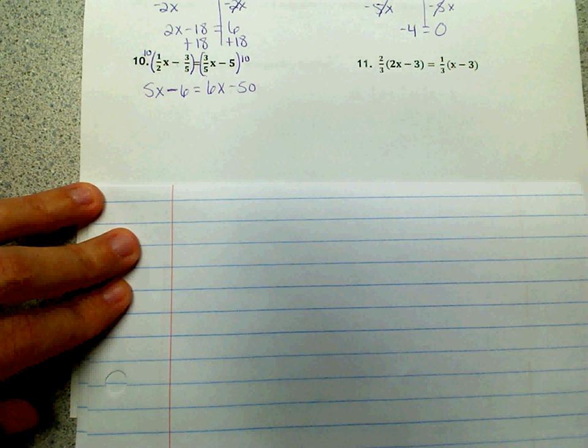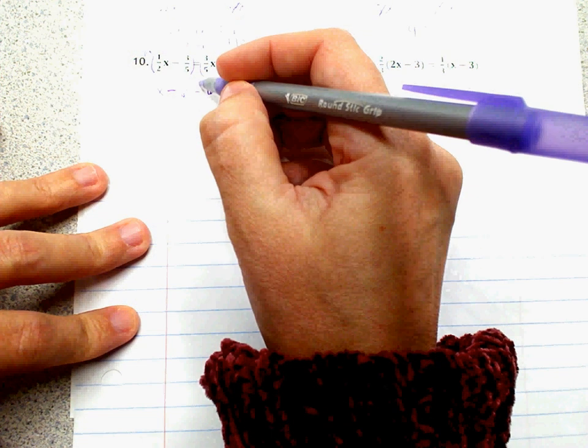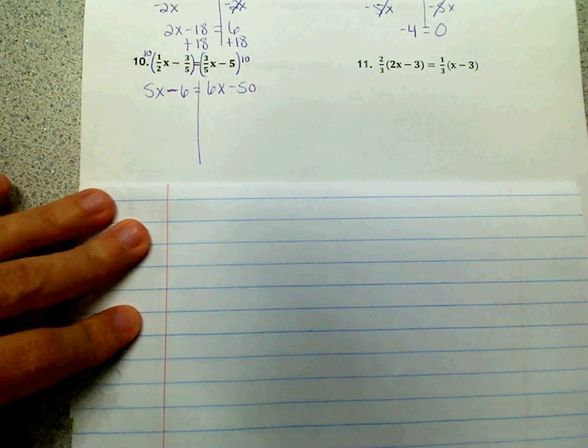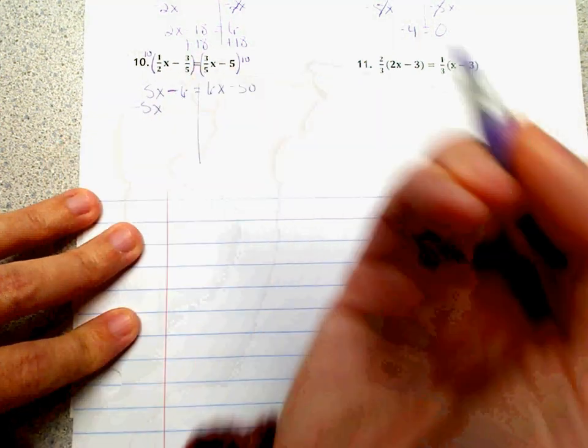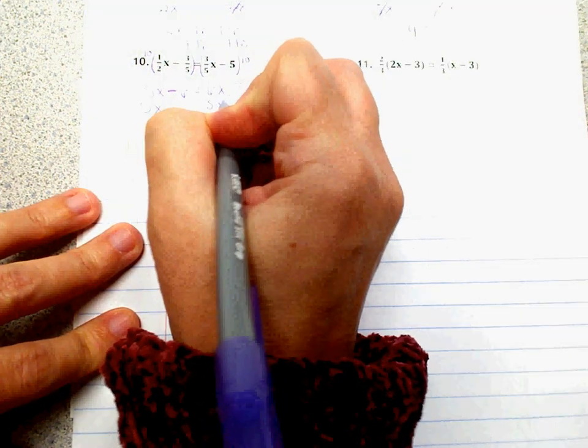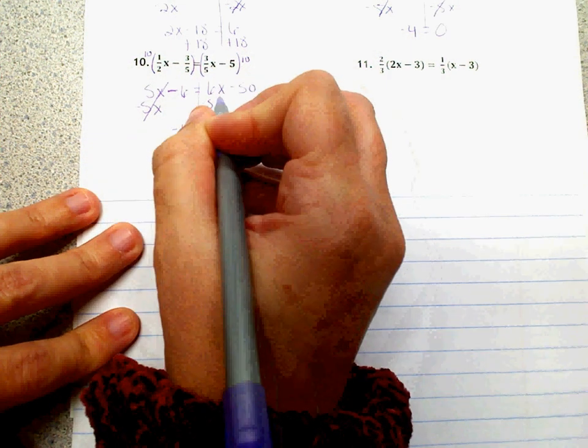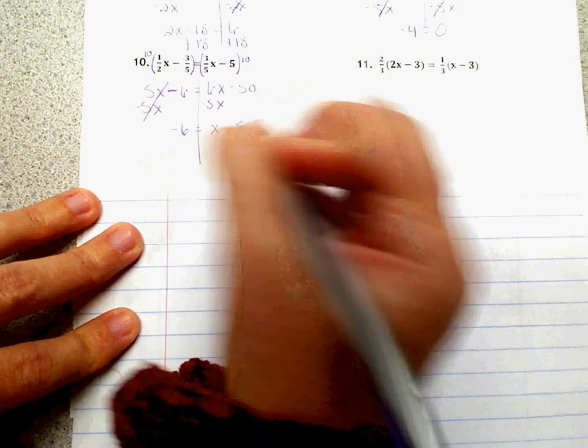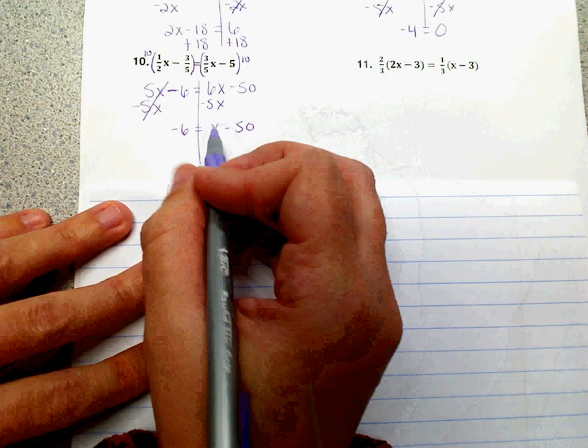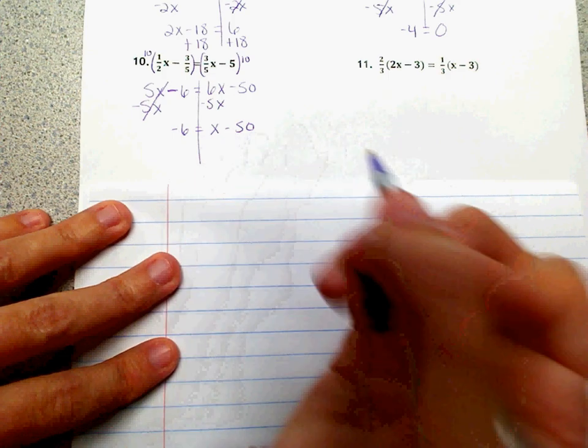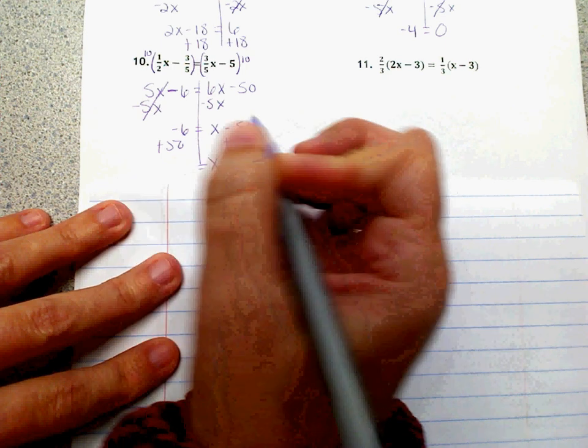So now we got rid of the fractions, and now it looks just like all the problems that we've worked previously. So we can separate the left side and the right side. 5x is smaller. That's just what I prefer. It doesn't matter. So I'm going to subtract it on both sides. So this side gives me negative 6. Over here, I get x minus 50. And then I need to get rid of that minus 50, so I'm going to add 50. So x equals 44.